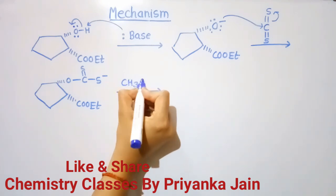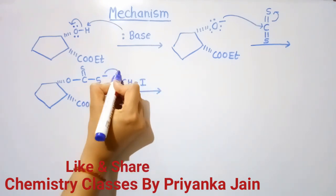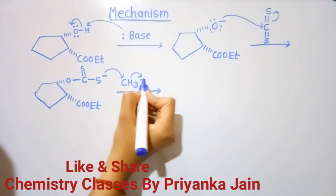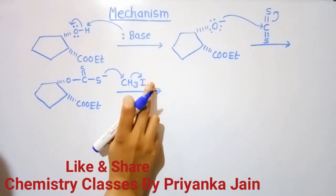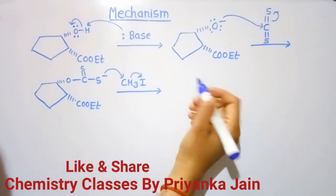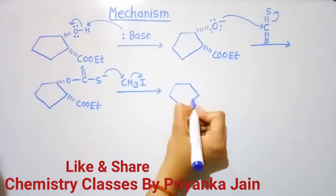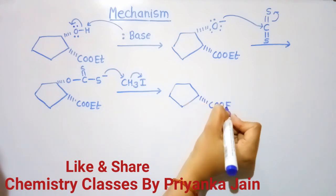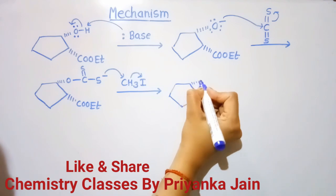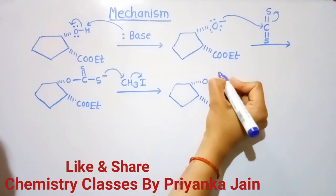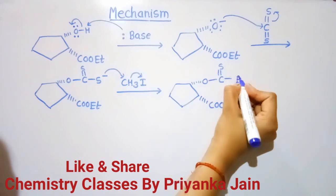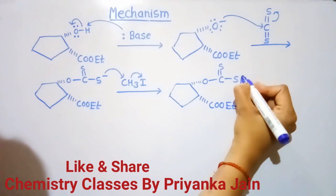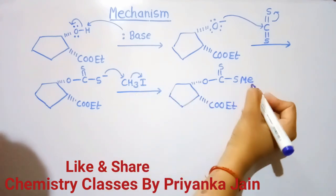Now we treat it with methyl iodide. This negative charge will attack the methyl iodide and this bond's electron density will come on the iodine, so we get iodide ion as the leaving group. A new bond is formed between the sulfur and the methyl group — we can write CH3 as Me.